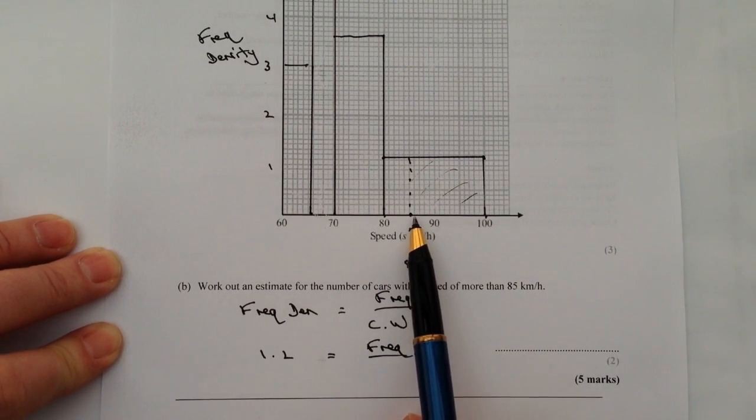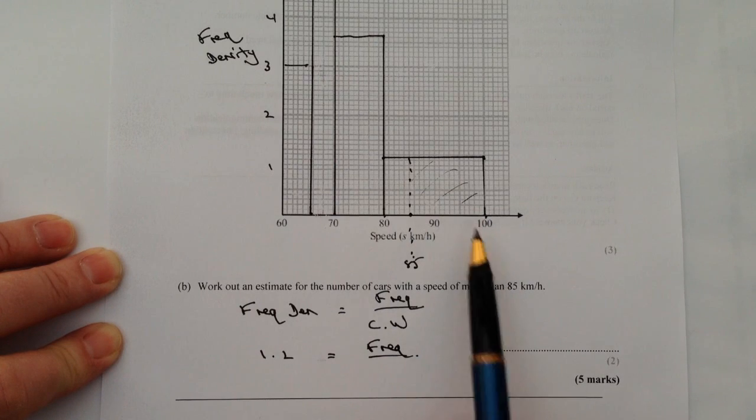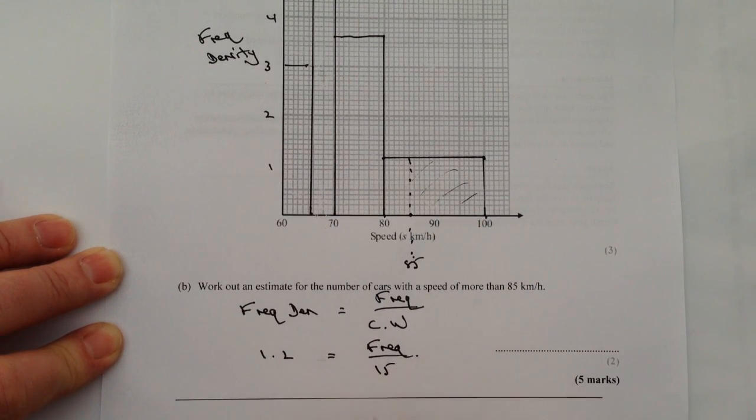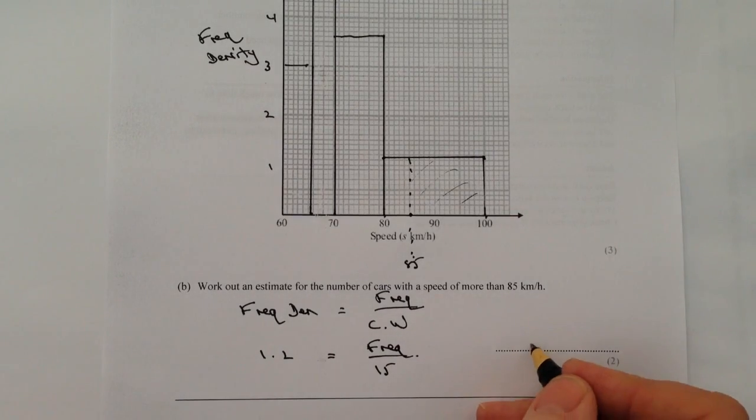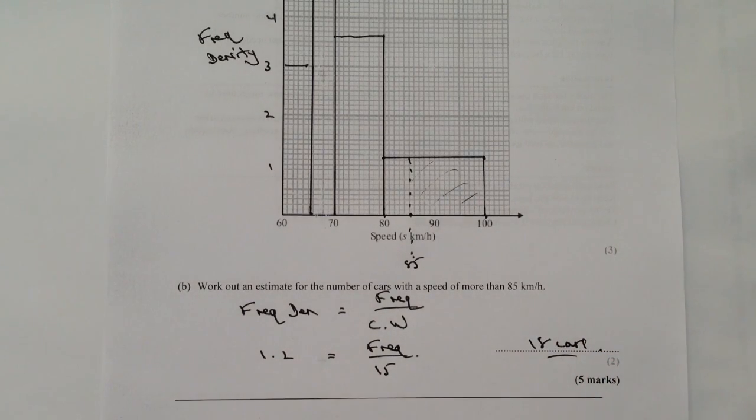And then I've got frequency, I don't know, that's what I'm looking to do. But class width, now in this particular case my class width is between 85 and 100, so my class width is going to be 15. So actually if I put that into a calculator, I can now work out that frequency is 15 times 1.2, and that should give me 18 cars.